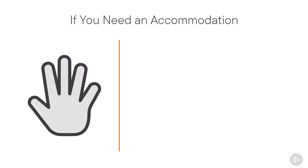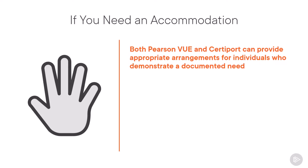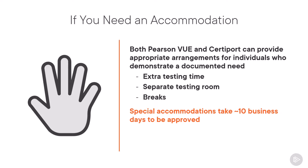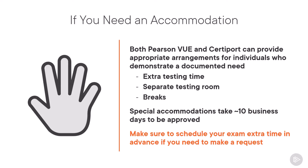Something to consider as you select your date and time: if you need an accommodation, both PearsonVUE and CertiPort can provide appropriate arrangements for individuals that demonstrate a documented need. This can include things such as extra testing time, a separate testing room, or even breaks. Special accommodations can take up to 10 business days to be approved, so if you need to request one, try to schedule your exam a bit more in advance so you can go through the request process without being stressed for time.